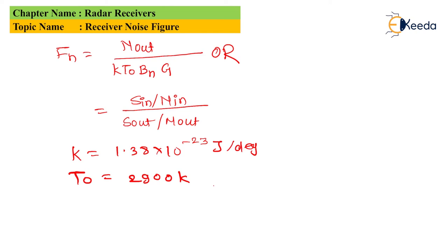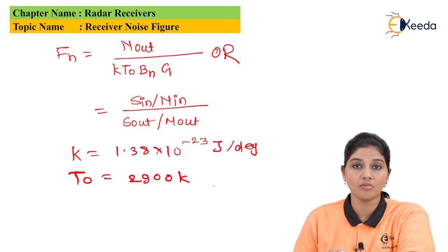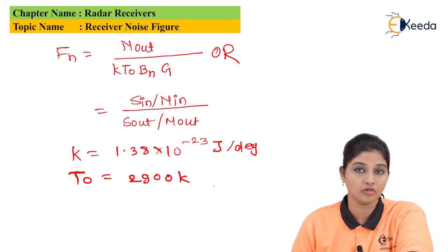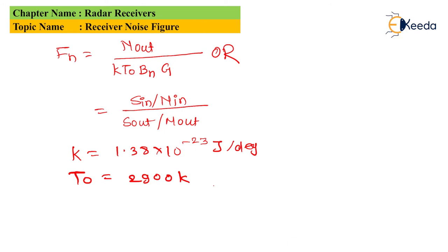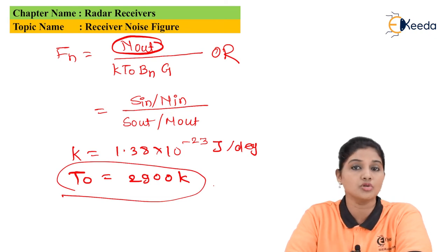In actual practice, the noise figure is used to compare the actual output noise power with the ideal noise power. The term N_out is the actual power delivered to the load, and for that purpose we consider the standard temperature range T₀ equal to 290 Kelvin. This equation gives two interpretations.